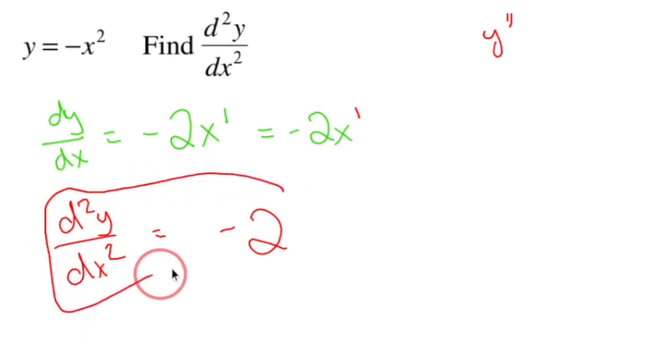So the second derivative of negative, that's the worst looking circle I've ever made in my entire life. The second derivative of negative x squared is negative two. That's it.